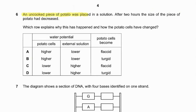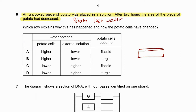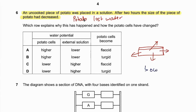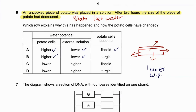Question number six: an uncooked piece of potato placed in a solution decreased in size after two hours. Since the potato lost water, the surrounding solution must have a lower water potential than the potato cells. Water potential of potato cells is higher; external solution water potential is lower. The potato cells become flaccid as they lose water. So 6A is the correct answer.